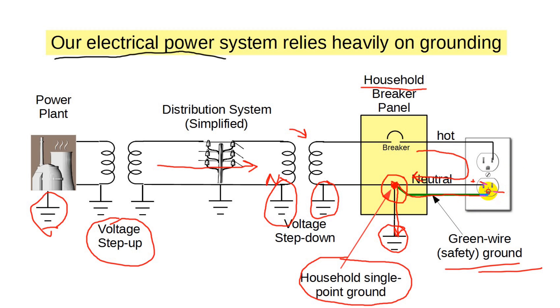So, all equipment these days has a green wire ground that travels back to the single point ground. Since no current normally flows in this line, anything connected to it is likely at near zero potential.